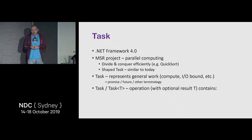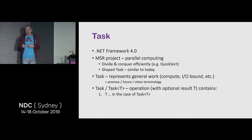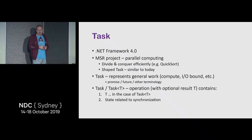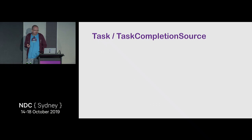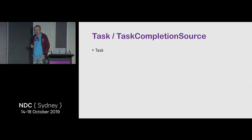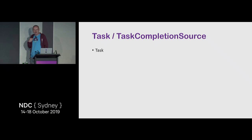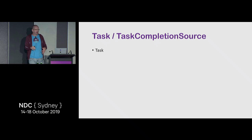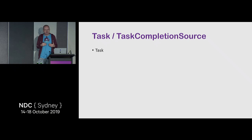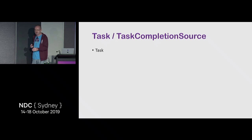Task contains the return value T for Task<T>, some synchronization state, and callback state. There's a beautiful thing called TaskCompletionSource which not many people encounter if they're only consumers of tasks. Task is something you consume — you hook up to it saying 'when you're done, call me.' But you can't directly change its state — that's the role of TaskCompletionSource.